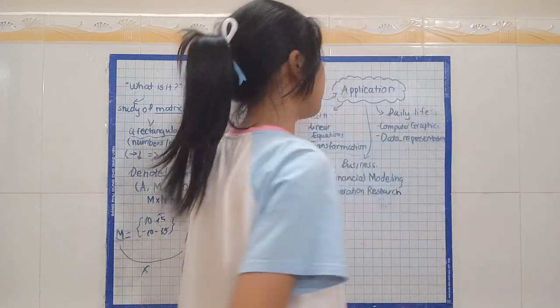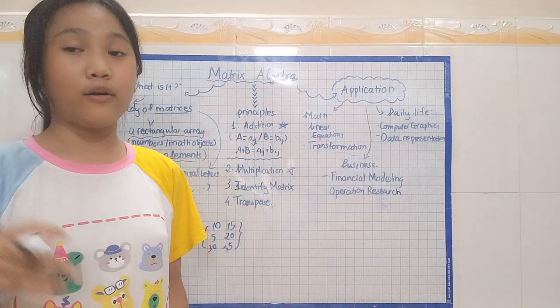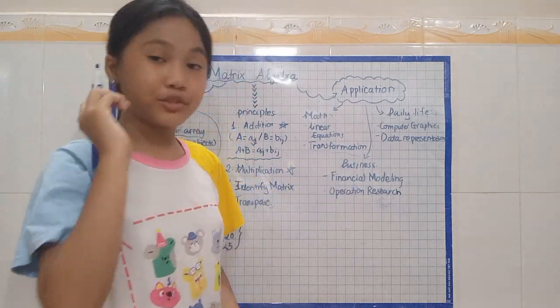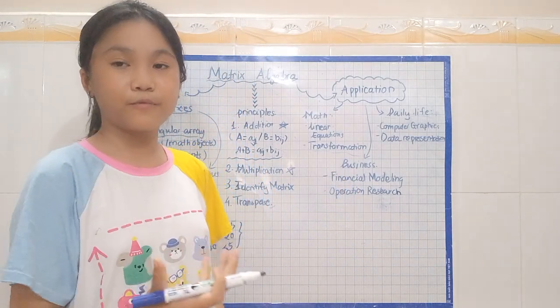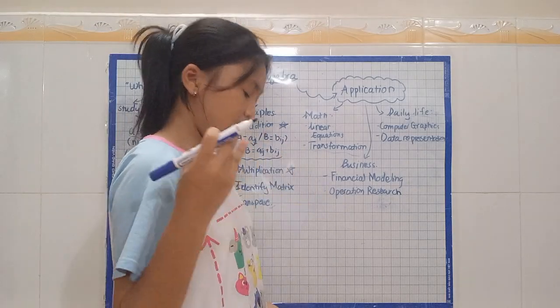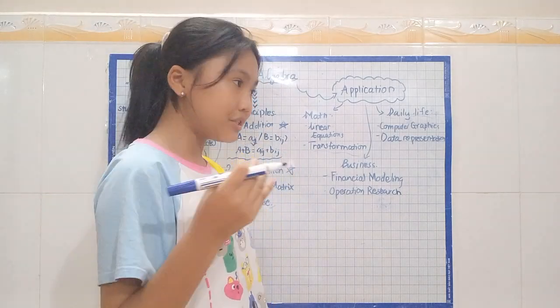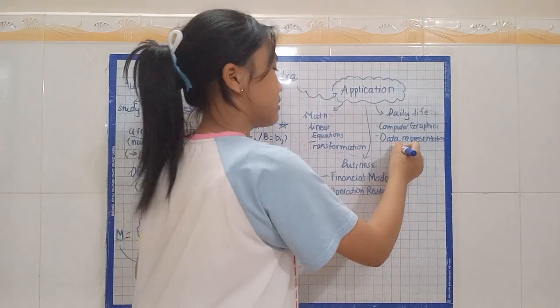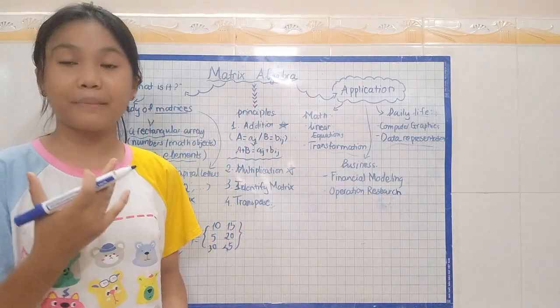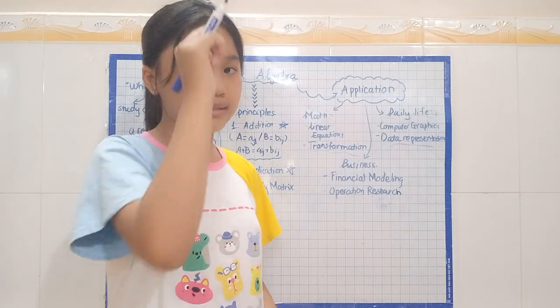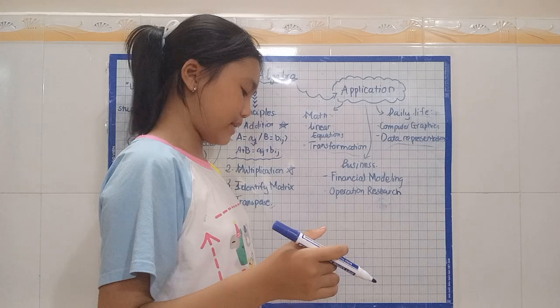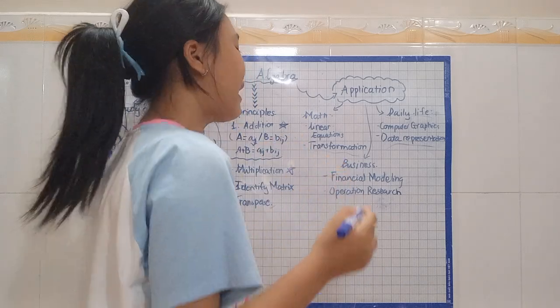Next, we have in daily life. In daily life, it also has a lot of uses. First, it's on computer graphics. Matrices are used to perform transformations such as rotations, scaling, and transitions in computer graphics. Next, on data representation, it could be used to store and manipulate data. It could be a really clear way to represent data.